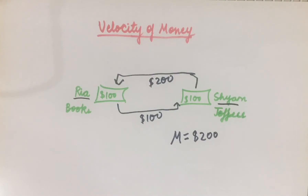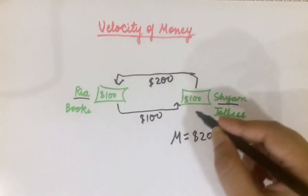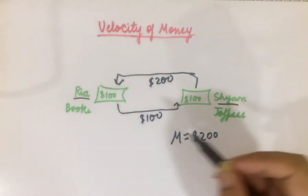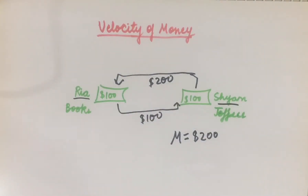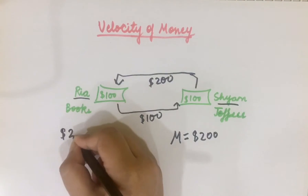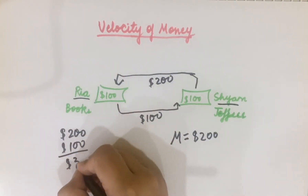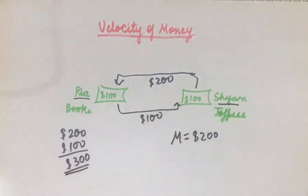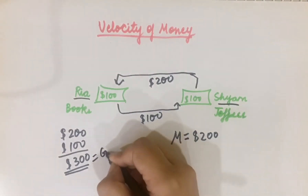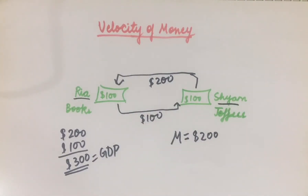So how much money is in this economy in terms of transactions? Ria has done $100 in transactions and Shyam has done $200 in transactions. So total transactions come to $300. And I call this GDP — how much value of transactions is happening in an economy. So my GDP in this economy is $300.